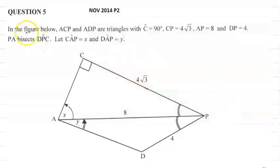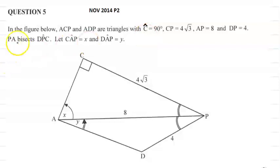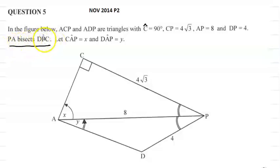In the figure below, ACP and ADP are triangles with angle C equals 90 degrees, CP equals 4√3, AP equals 8, DP equals 4, and PA bisects DPC. Let angle CAP equal x and angle DAP equal y. This is very important: PA bisects DPC, which means angle CPA equals angle DPA.